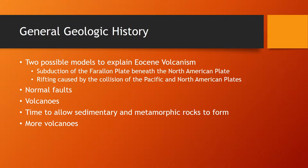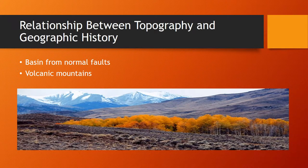Now for the general geologic history. All of the volcanism we've discussed took place during the Eocene epoch, which spanned from 56 MA to 33.9 MA. There are two possible models to explain the volcanism: the most commonly accepted is subduction of the Farallon Plate beneath the North American Plate; the other is rifting caused by collision of the Pacific and North American Plates. The first observed feature was normal faults resulting in the grabens previously discussed, followed by formation and eruption of volcanoes, then time to allow sedimentary and metamorphic rocks to form, followed by more volcanoes.